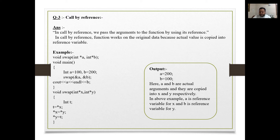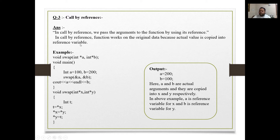Next is call by reference. We pass the argument to the function by using its reference, using the '&' operator. It also defines the reference of another variable. In call by reference, the function works on the original data because the actual value is copied into the reference variable using '&'.